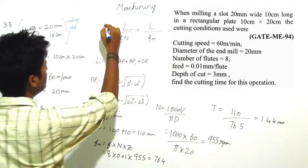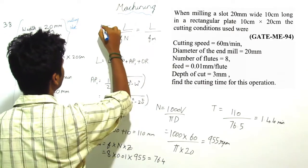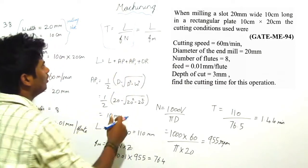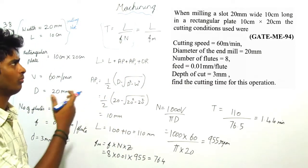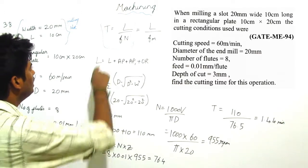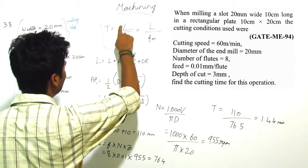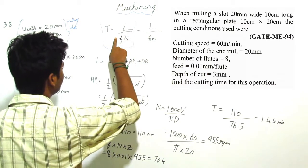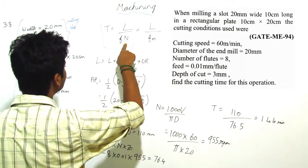We know that T is equal to L by Fn. This formula is common for all operations under machining except shaping and broaching operation. T is time taken per cut, L is total length, F is feed, N is spindle speed that is in RPM.